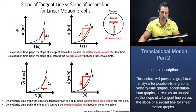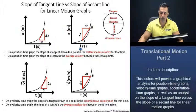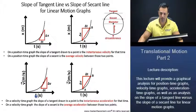The top two graphs — this graph here and this graph here — are both position versus time graphs. The two graphs down here, this one and this one, are both velocity time graphs.